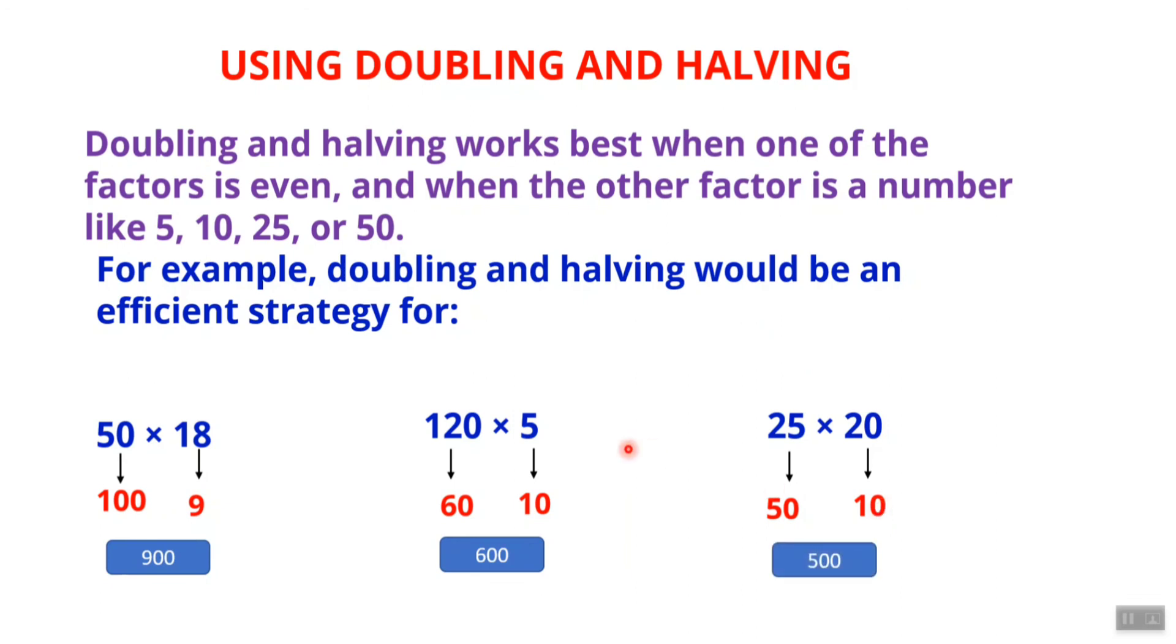It's not always easy to multiply, but when one factor is 5, 10, 25, or 50 and the other factor is an even number, this strategy is easier to use.